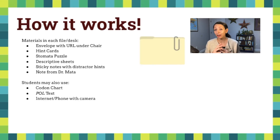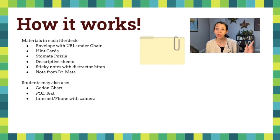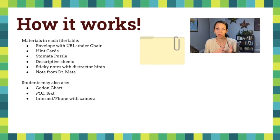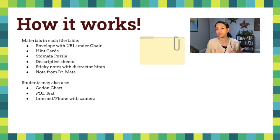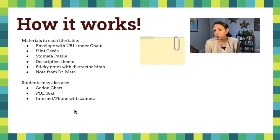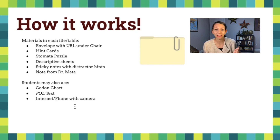If you're a teacher and want to know exactly how this particular escape room works, here are the details. At each table there should be an envelope with the URL under the chair, hint cards, the stomata puzzle, and descriptive sheets. If you want to use my resources to build your own escape room, I'll have a form linked in the description — submit that form and I'll share the materials I use. Students can also use a codon chart if they have one, or you may want to print some out. An old biology textbook works for the distractor clues, along with students' phones with a camera for scanning the QR code.